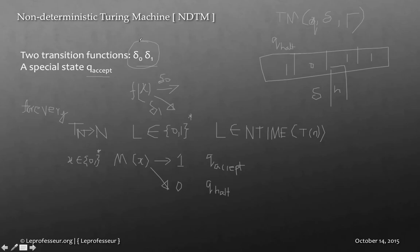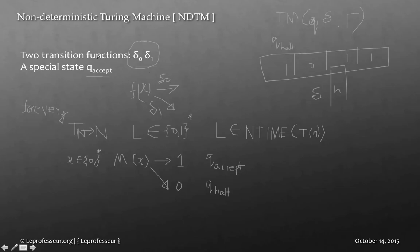At every input — say you are reading a 1 — the head can map whether to go left, right, stay, or take some other action based on the two transition functions delta 0 or delta 1. These two transition functions are implementation defined. It is the understanding that in a state of one way, we can do things in two ways. The machine also has a special state q_accept in addition to q_halt.